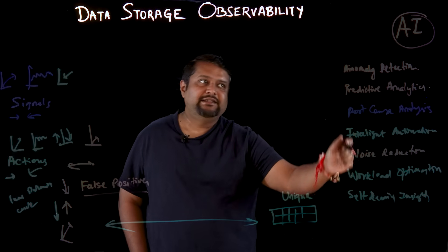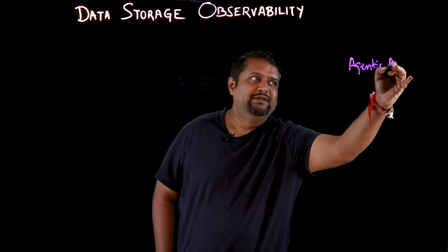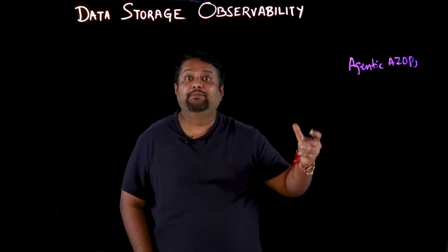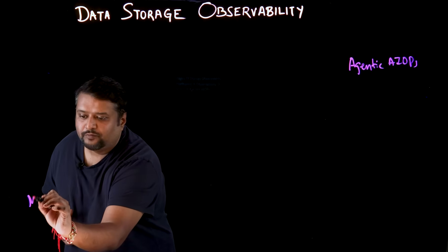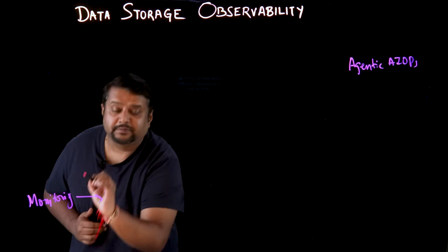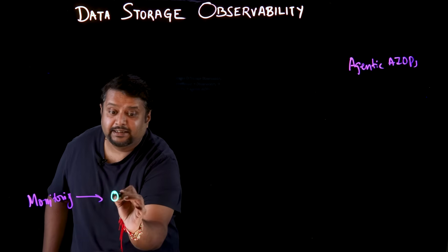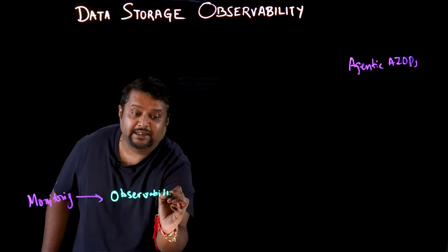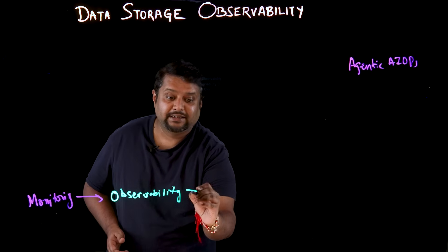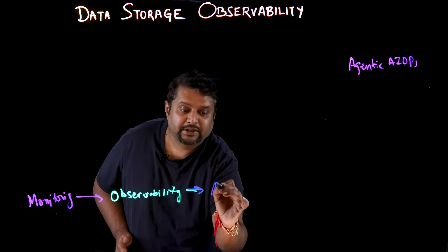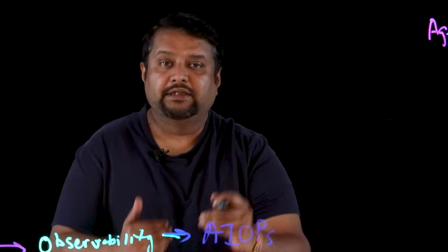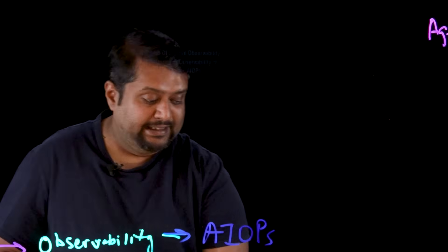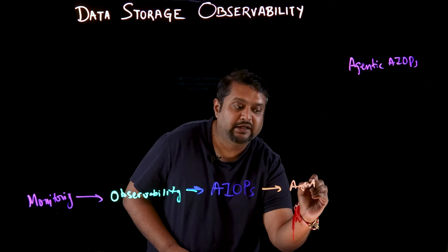Now that we have covered the role of AI in storage observability, let's look at four stages of storage observability. The first stage is basic monitoring of a storage box. The second is observing the data the storage box produces and giving insights to the admin. The third is AI ops — leveraging AI to make the observability experience better for the admin. And finally, agentic AI ops, where agents are deployed to do work that normal AI was unable to do.